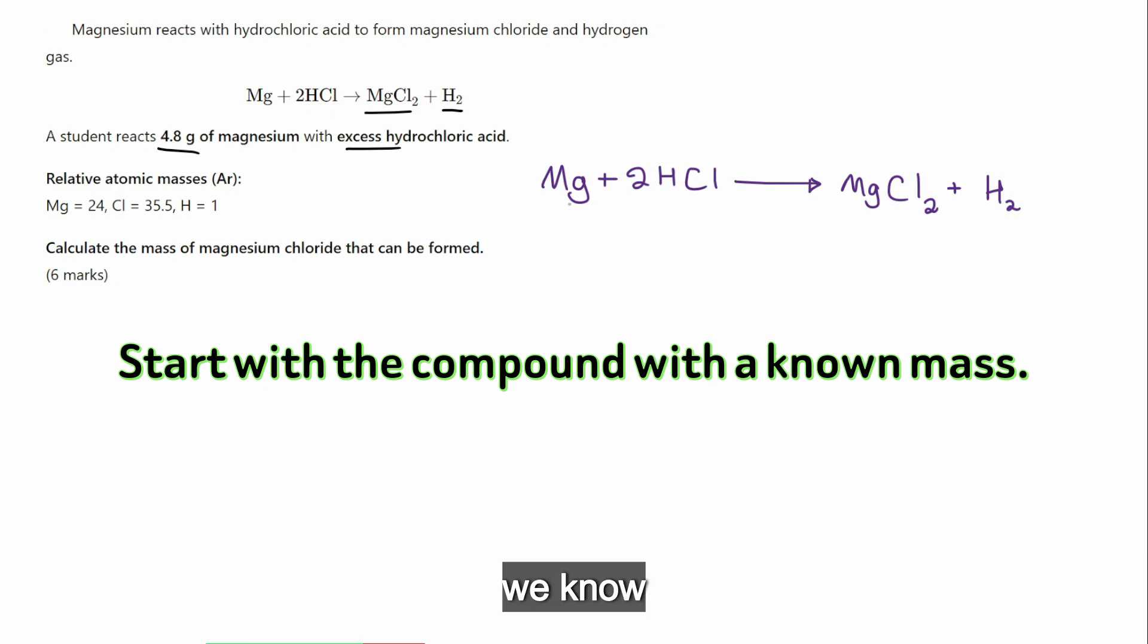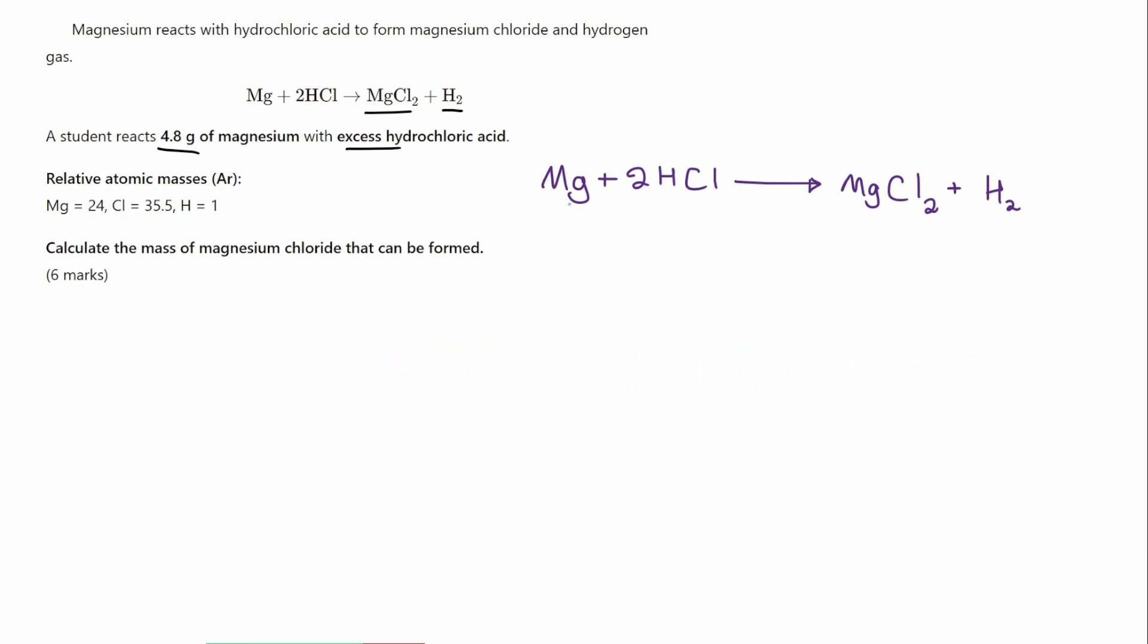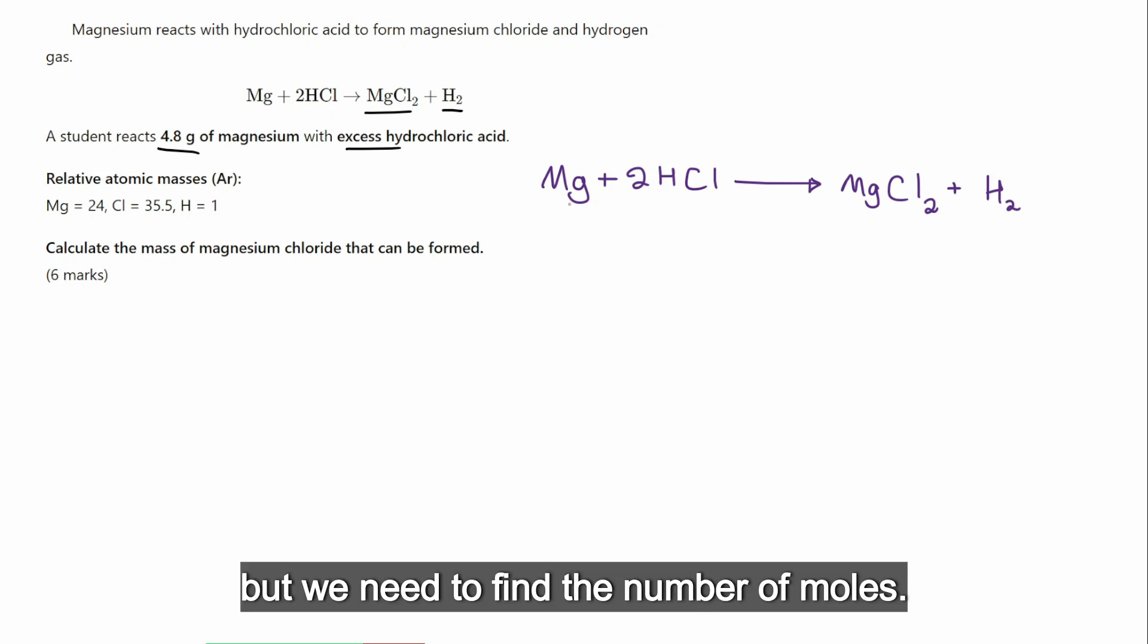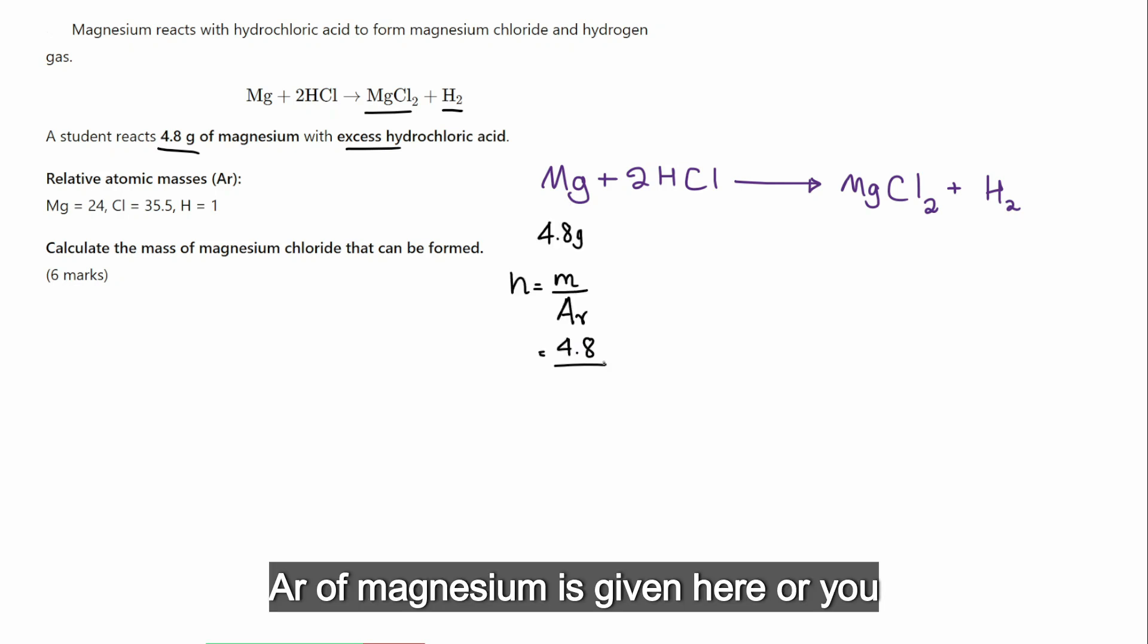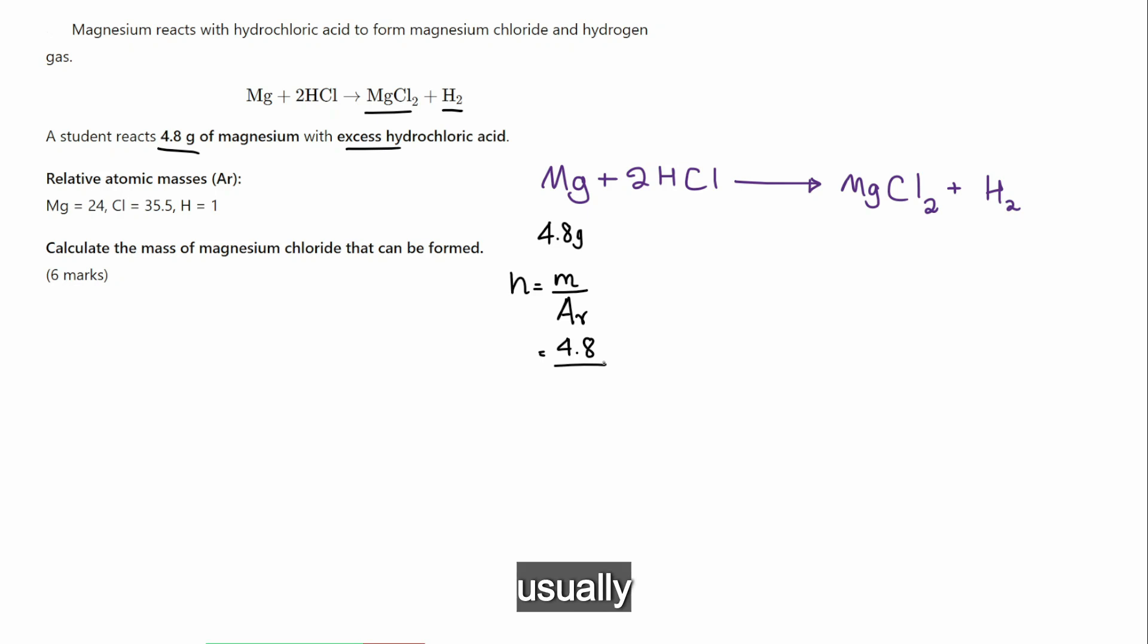So, we know the mass is 4.8 grams, but we need to find the number of moles. Remember, the formula is number of moles equals mass over atomic mass. Mass is 4.8 divided by Ar of magnesium is given here, or you can use the periodic table in the exam. So, we get 4.8 divided by 24.